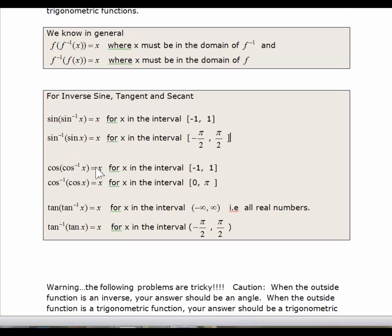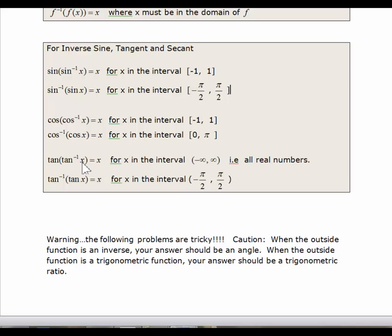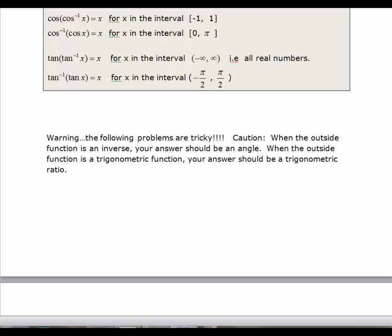For inverse cosine, our input values have to be from negative 1 to 1. When we take the inverse cosine of the cosine of x, this is an angle, and that angle has to be between 0 and π for an inverse cosine function. For inverse tangent, the input domain can be any real number, but the output value has to be between negative π/2 and π/2.